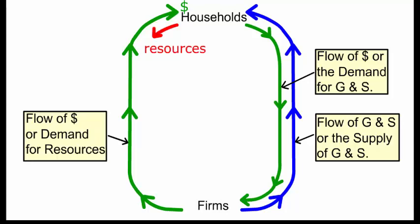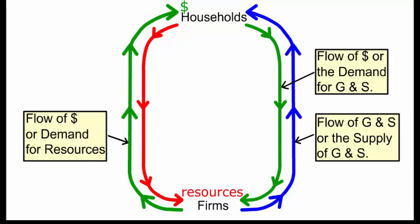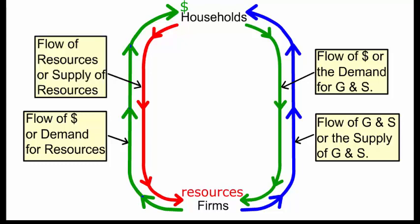In return, the households supply the firms with the resources of land, labor, capital, and entrepreneurship skills. We call this side of the circular flow the flow of resources or the supply of resources.